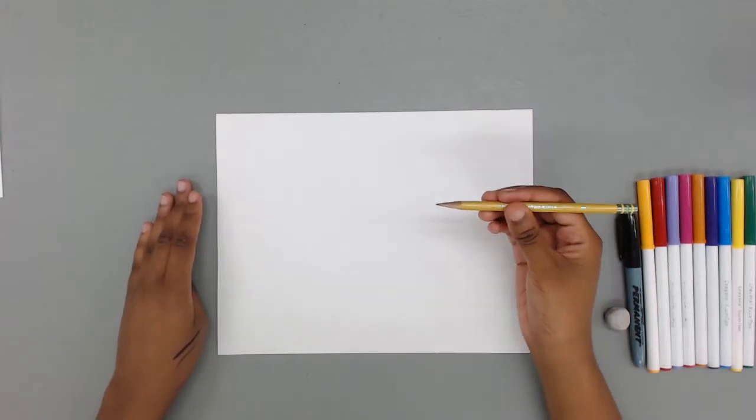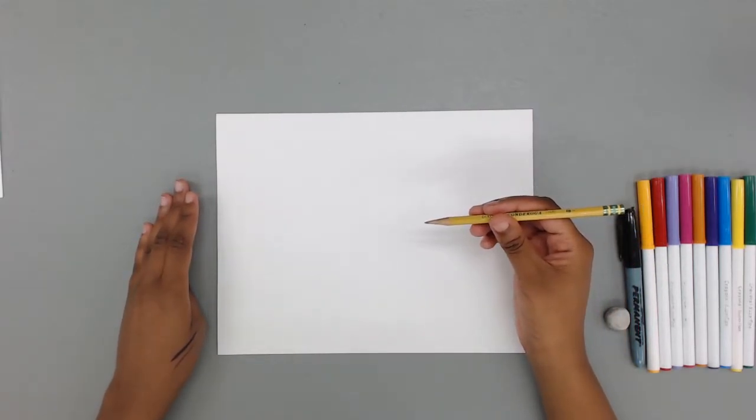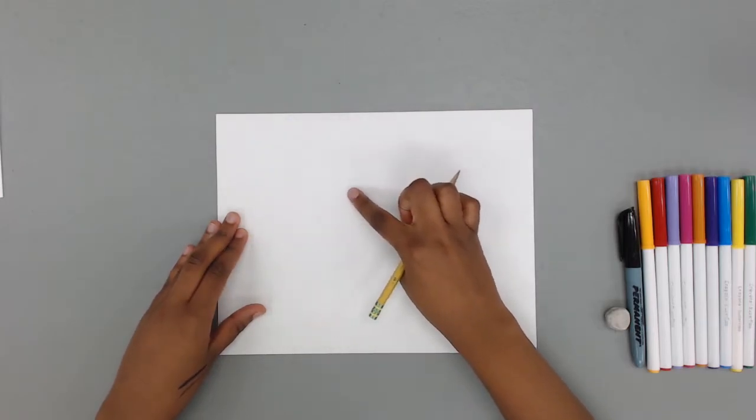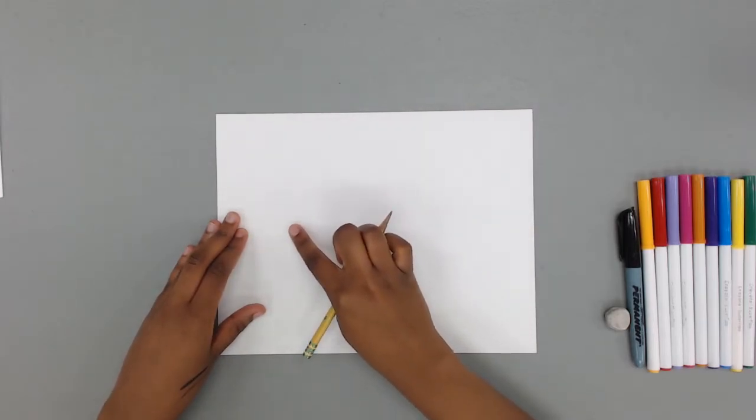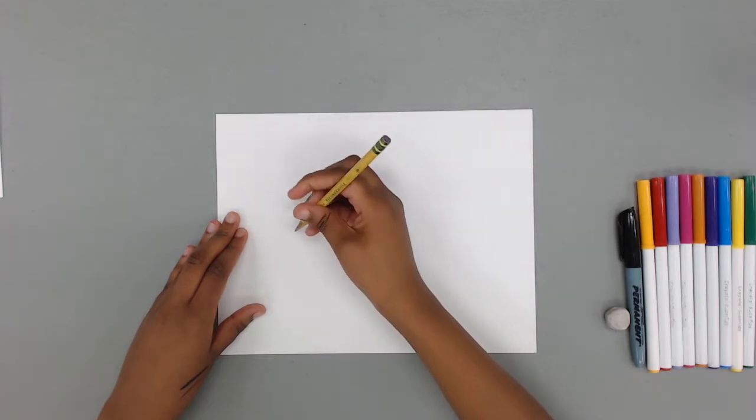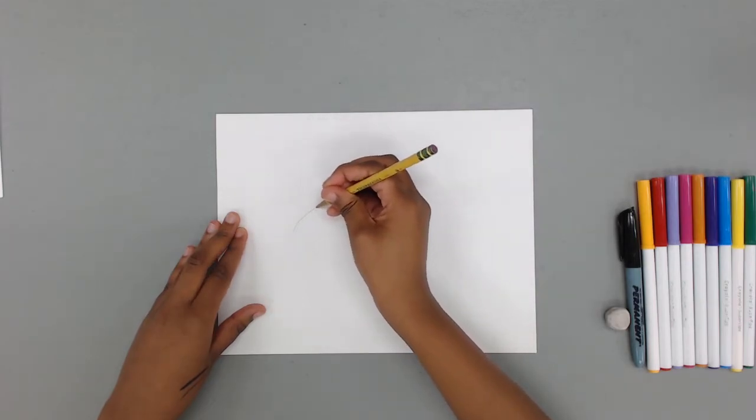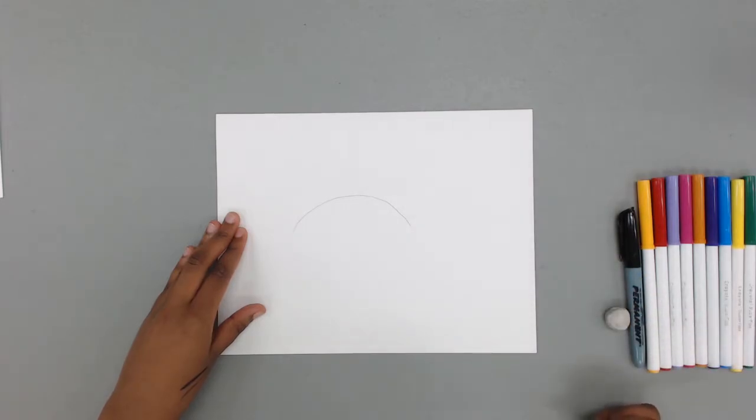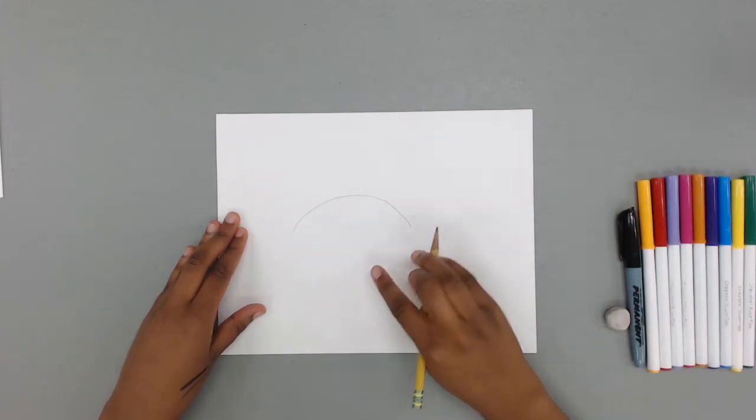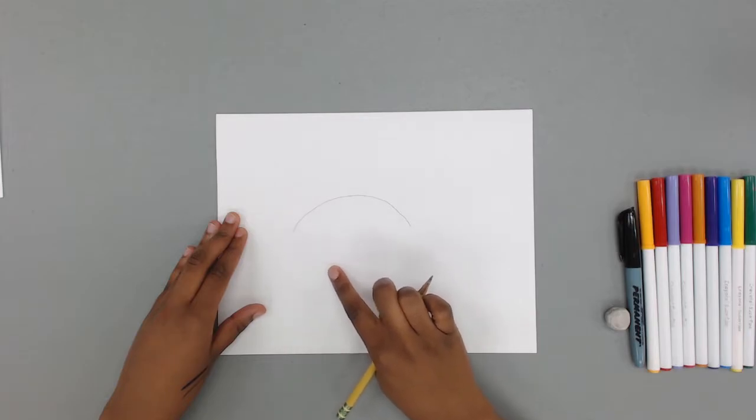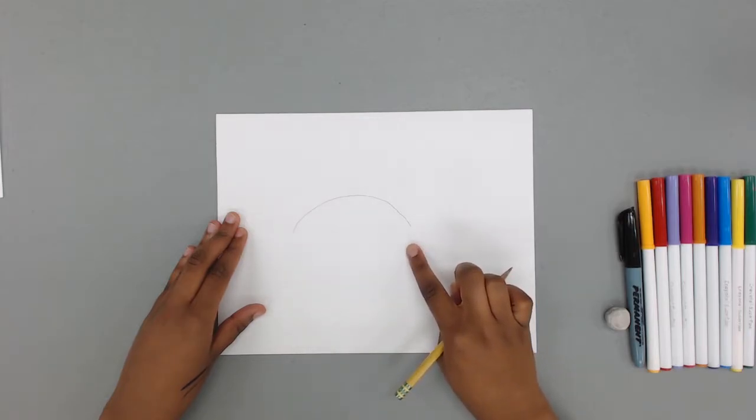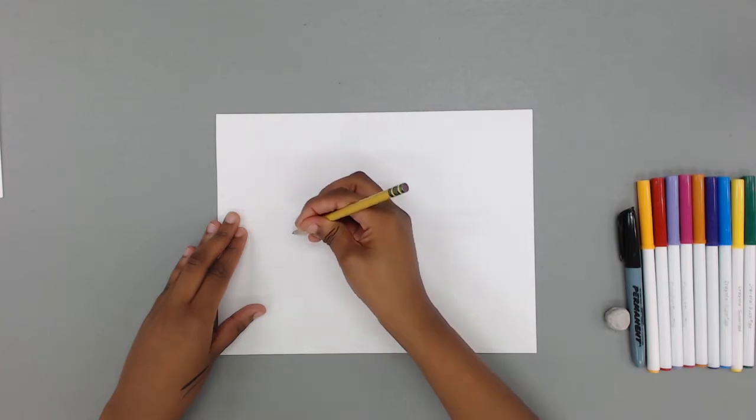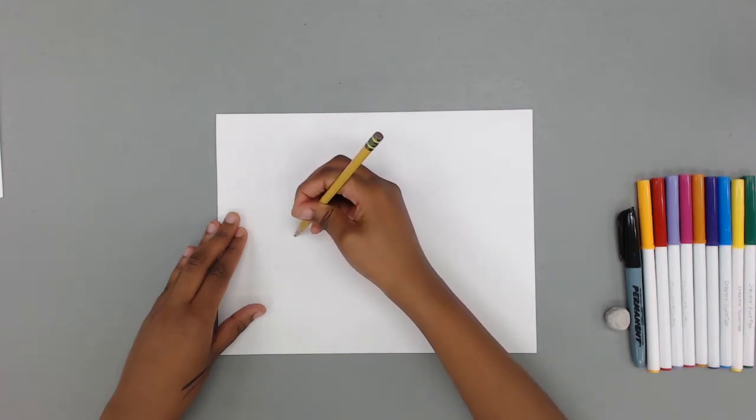Using our pencil we're going to draw a nice long curved line on our blank sheet of paper. We're going to have this line be in the middle of our page to represent the top of the fish. Now we're going to draw the bottom of our fish using another curved line that's upside down. We're going to start here so we have the tip of the fish's face.